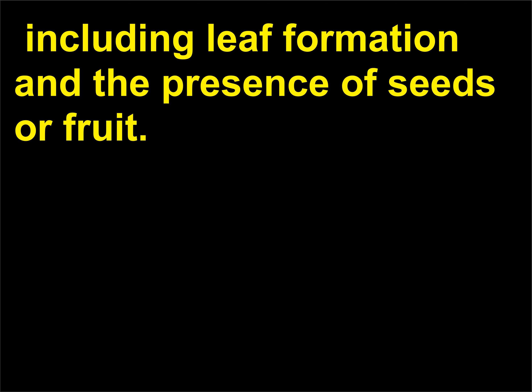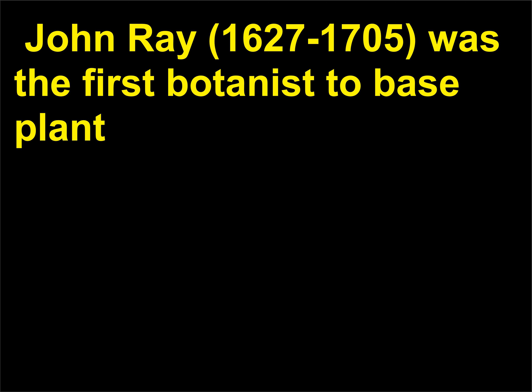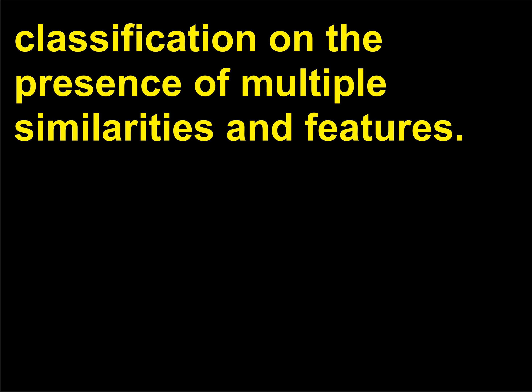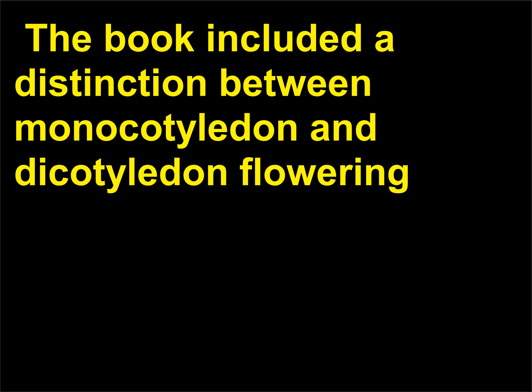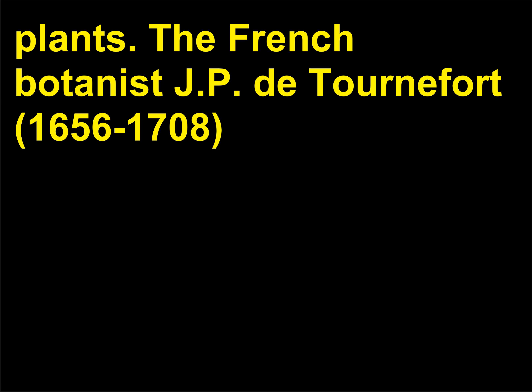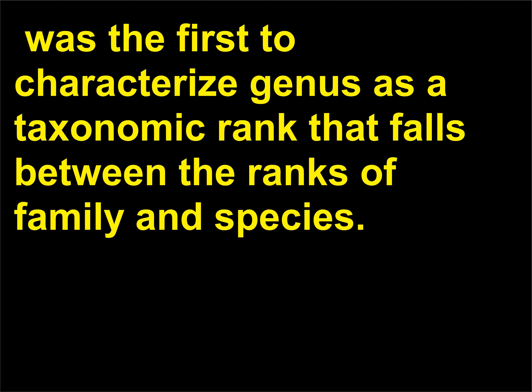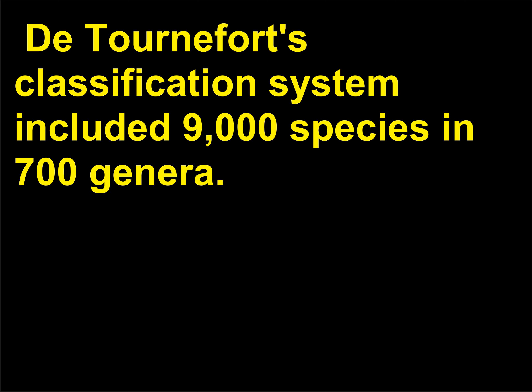Cesalpinus classified plants according to leaf formation and the presence of seeds or fruit. John Ray, 1627 to 1705, was the first botanist to base plant classification on the presence of multiple similarities and features. His Historia Plantarum Generalis, published between 1686 and 1704, was a detailed classification of more than 18,000 plants. The book included a distinction between monocotyledon and dicotyledon flowering plants. The French botanist J.P. de Tournefort, 1656 to 1708, was the first to characterize genus as a taxonomic rank that falls between the ranks of family and species. De Tournefort's classification system included 9,000 species in 700 genera.